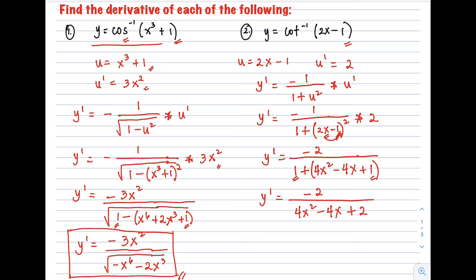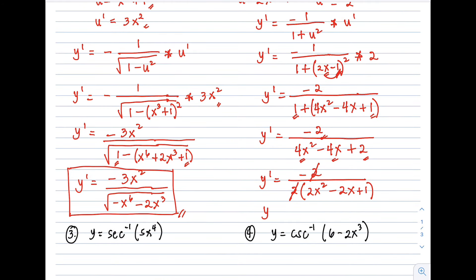Notice the denominator has a common factor of 2. We can factor out 2 from the trinomial: 4x² - 4x + 2 = 2(2x² - 2x + 1). This cancels with the 2 in the numerator. The final answer is y prime equals negative 1 over (2x² - 2x + 1).